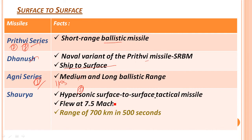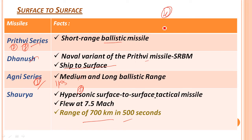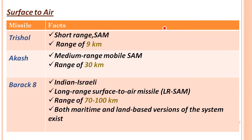Shaurya is at Mach 7.5 — that's 7.5 times the speed of sound. Its range is around 700 km and it can cover 700 km within approximately 500 seconds. The surface-to-surface missiles are: Prithvi, TV, Agni, Dhanush, and Shaurya — that's four surface-to-surface missiles.